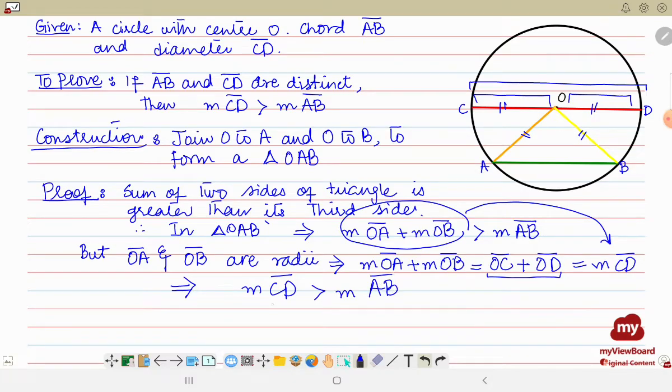So what was CD? This implies that diameter CD is greater than what? AB was the chord, is greater than chord AB. So this is what we had to prove: the diameter of a circle is greater than any of the other chords drawn in the same circle. Hope you understand this, thank you so very much, Allah Hafiz.